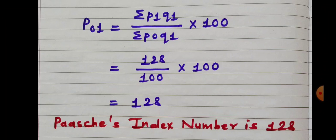Now apply the formula of Paasche's price index number: P01 is equal to Sigma P1Q1 divided by Sigma P0Q1 into 100. Sigma P1Q1 is 128 and Sigma P0Q1 is 100. So 128 upon 100 into 100, we get 128. So Paasche's price index number is 128.